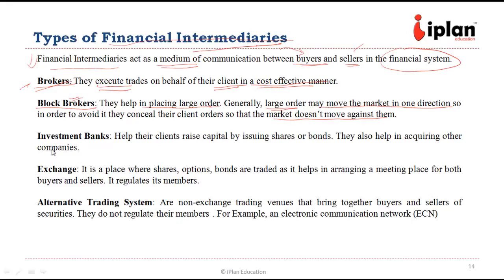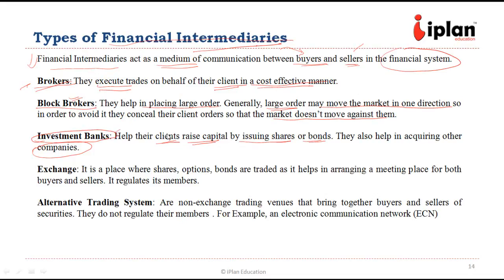The third kind of financial intermediaries are investment banks. They help their clients to raise capital by issuing either shares or bonds, and also help in the acquisition of other companies. If a large investor, private equity fund, or a large company has excess cash and wants to buy stakes in a company, or if a company needs capital through shares or bonds, they can use the services of an investment bank.